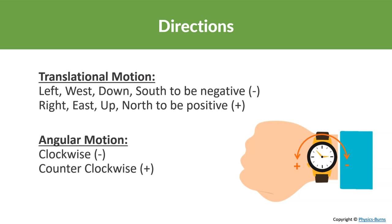Just as in translational motion where left, west, down, and south are negative while right, east, up, and north are positive, in angular motion we typically take clockwise as negative and counterclockwise as positive.